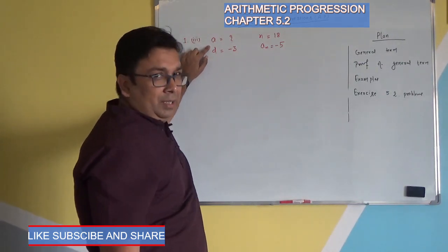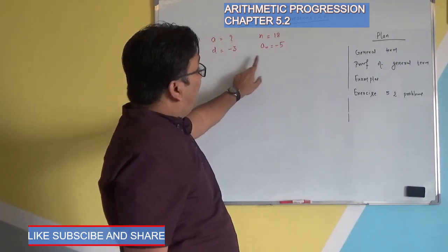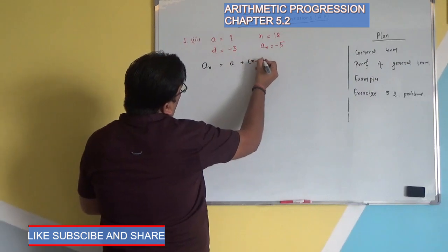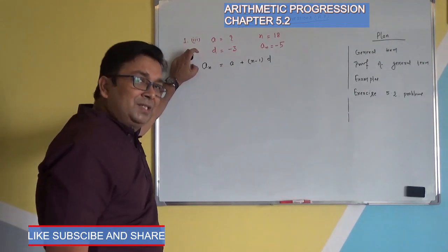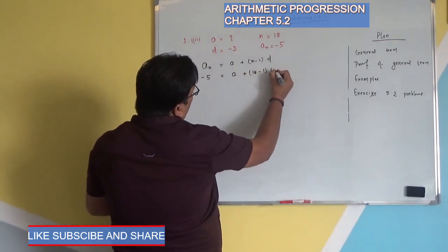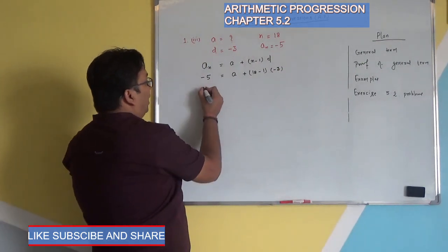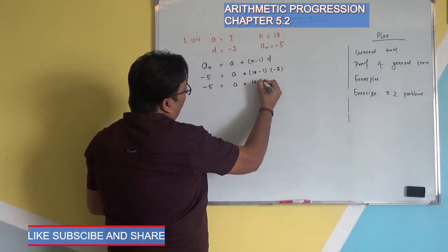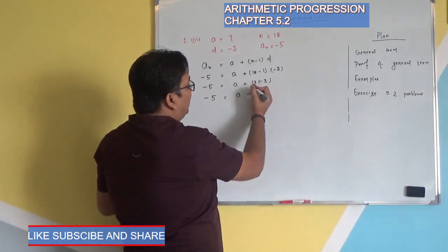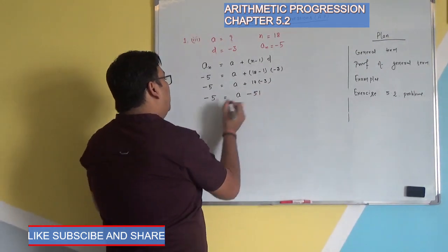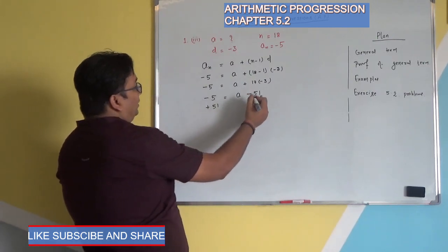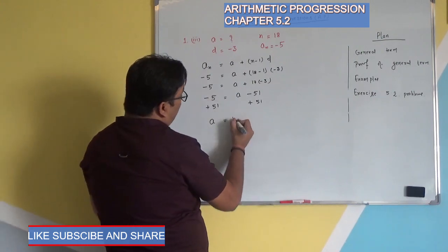Now we first move on to the third part of the first chapter question. In the third part, we are given: A is blank (unknown), n is 18, d is minus 3, and Aₙ is minus 5. First, we write our formula: Aₙ equals A plus n minus 1 into d. Now place what is given: Aₙ is minus 5, A we need to find, n is 18 so n minus 1 is 17, and d is minus 3.